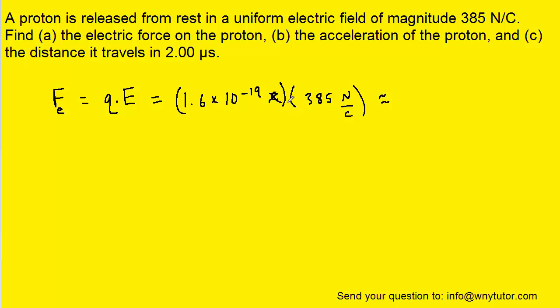We can see that the unit of coulombs will cancel, leaving us with an overall force of 6.16 times 10 to the minus 17 newtons. So that will be the electric force acting on the proton as it moves through the electric field.